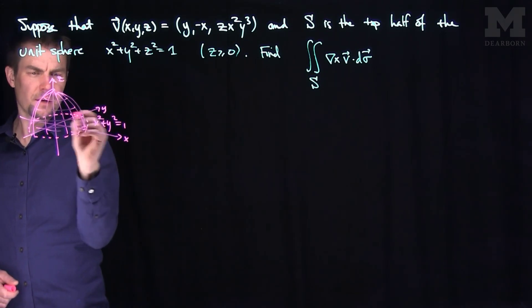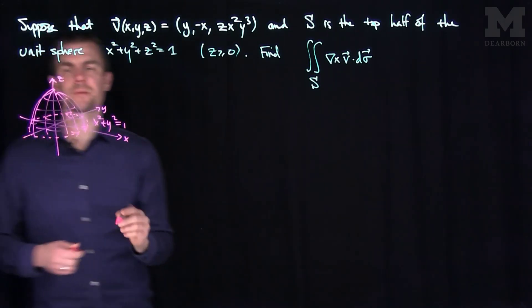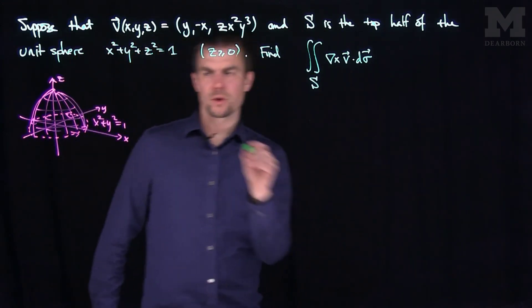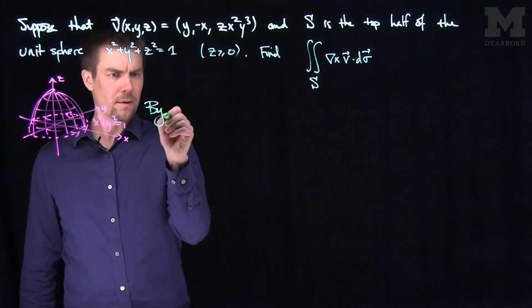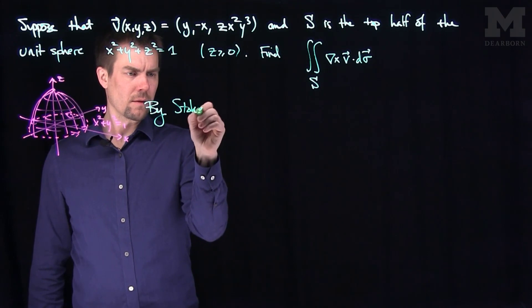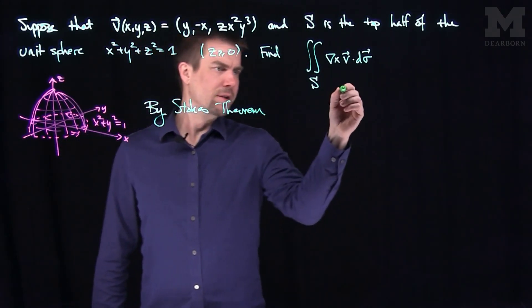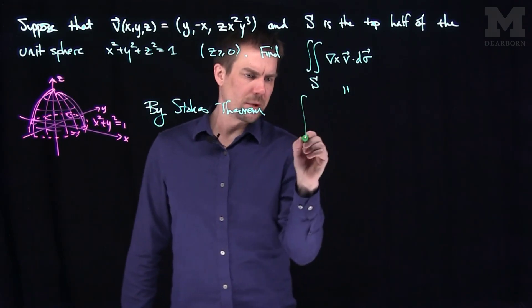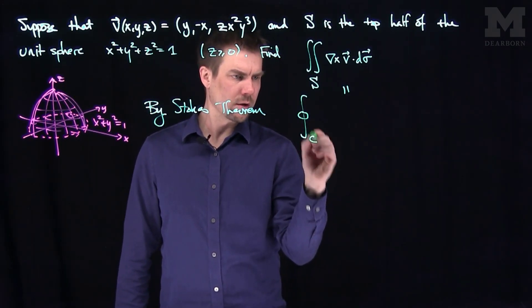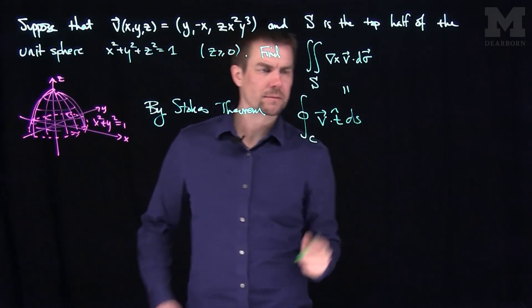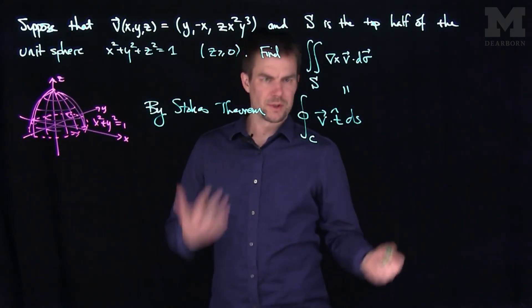And we're going to orient the boundary to be counterclockwise. And so what we can do is we can just immediately apply Stokes' theorem. So by Stokes' theorem, this integral over here is going to be the flow integral of v over the boundary. And so now, that's what Stokes' theorem exactly says.